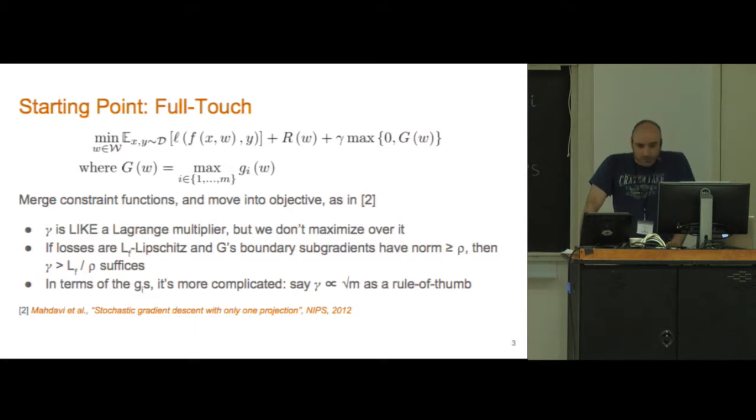Then we'll take this uppercase G and add it times gamma into our objective as a penalty function. This gamma looks like a Lagrange multiplier but we're not maximizing over it. It's a parameter to our algorithm.